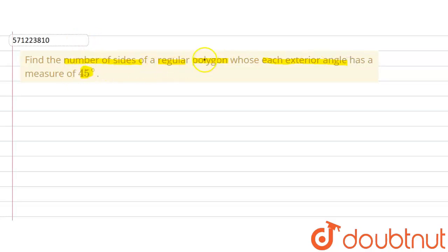So in this question we are given the measure of exterior angle of a regular polygon. Exterior angle which is equal to 45 degree and we are supposed to find out the number of sides.